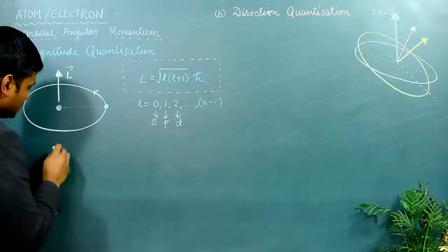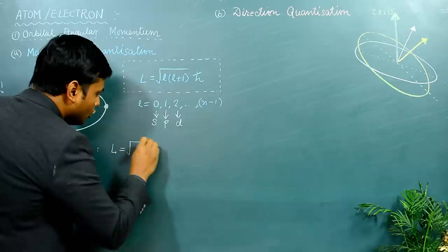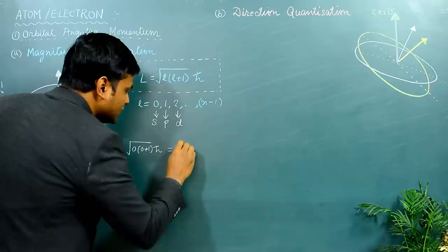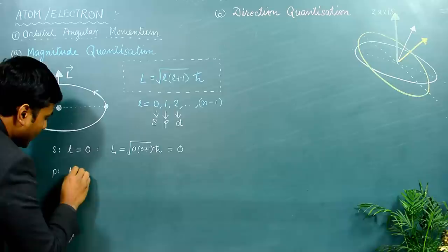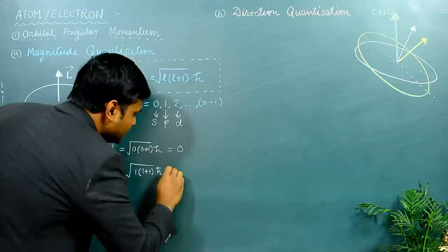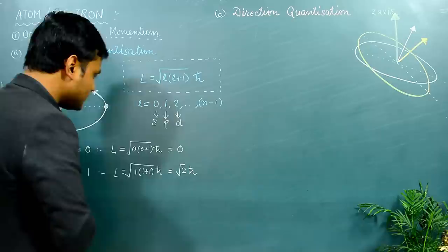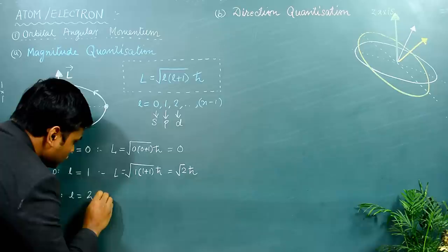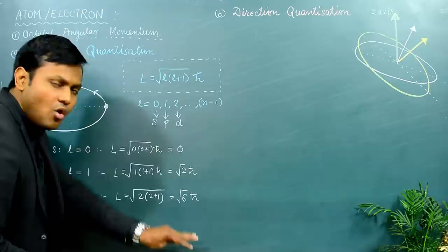For l equals 0, you have the s orbital; for l equals 1, the p orbital; for l equals 2, the d orbital, and so on. For the s orbital with l equal to 0, the magnitude is root of 0(0+1) times ℏ, which equals 0. For the p orbital with l equal to 1, the magnitude is root of 1(1+1) times ℏ, which is root 2 times ℏ. For the d orbital with l equal to 2, it is root of 2(2+1) times ℏ, which is root 6 times ℏ.